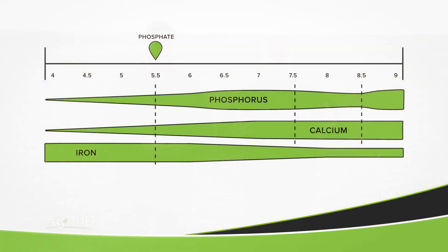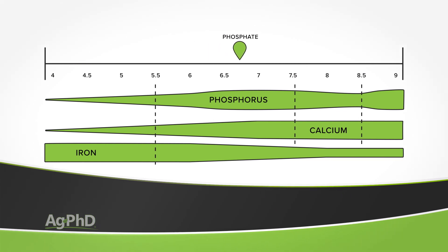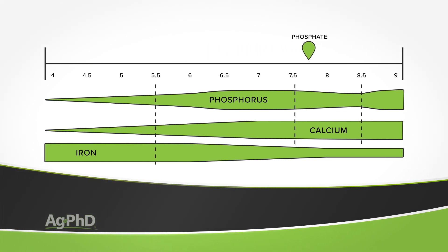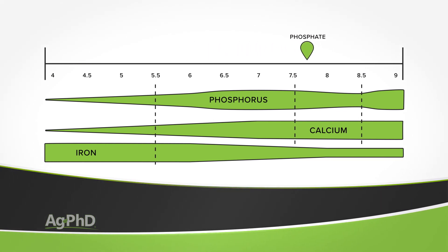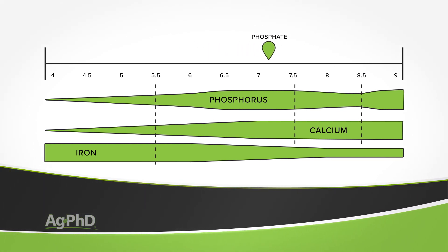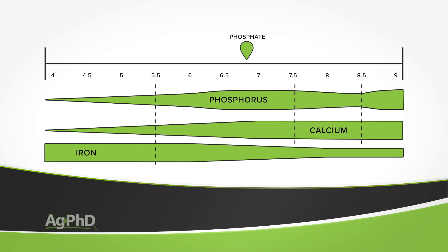By simply getting the soil pH in the appropriate range — let's say around 6, 6.5, or 7 — phosphorus becomes a lot more available than when the pH is too low or too high.